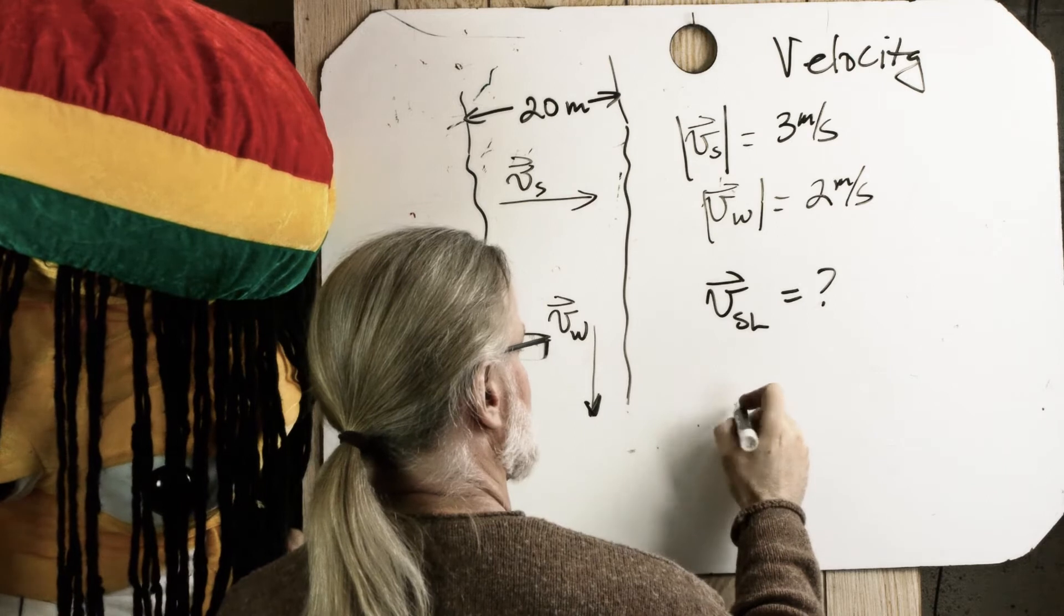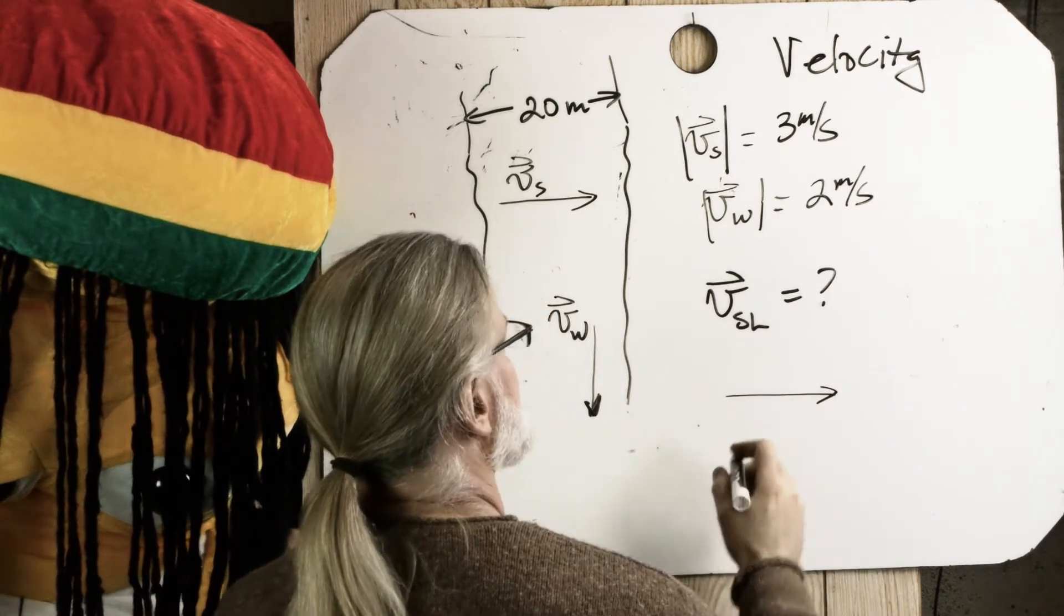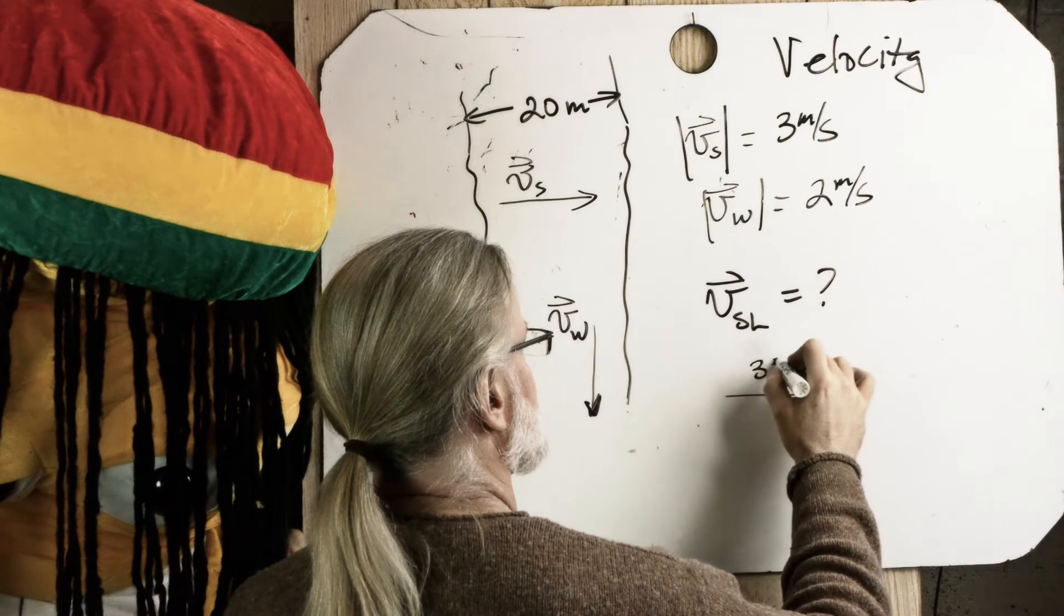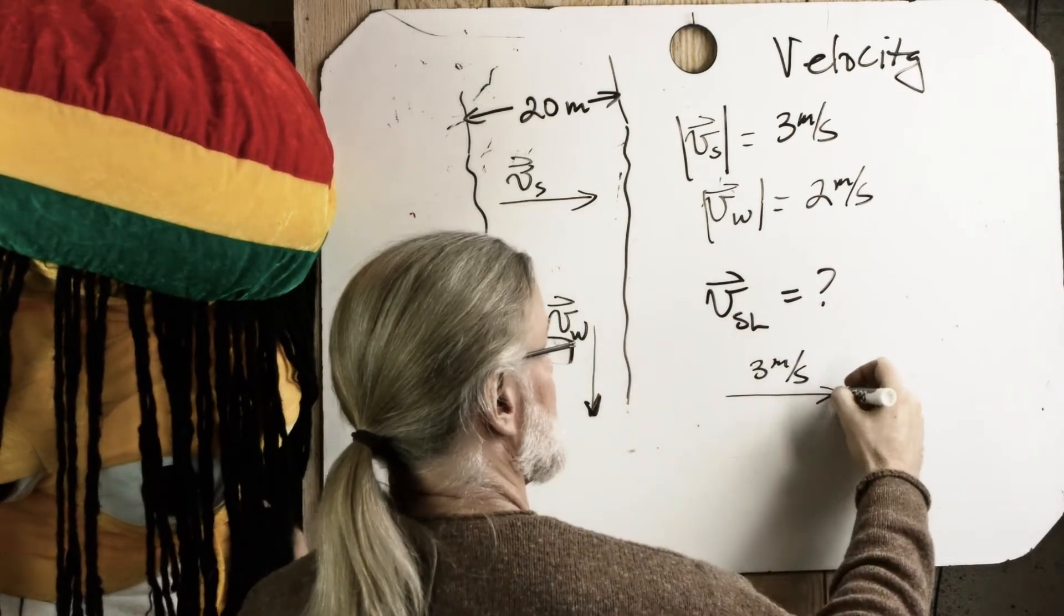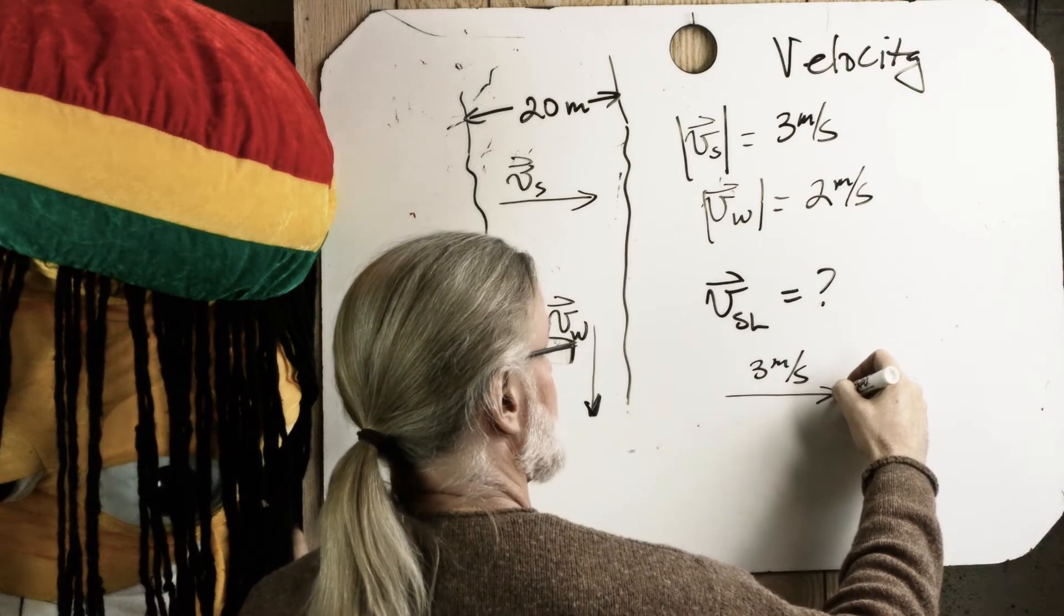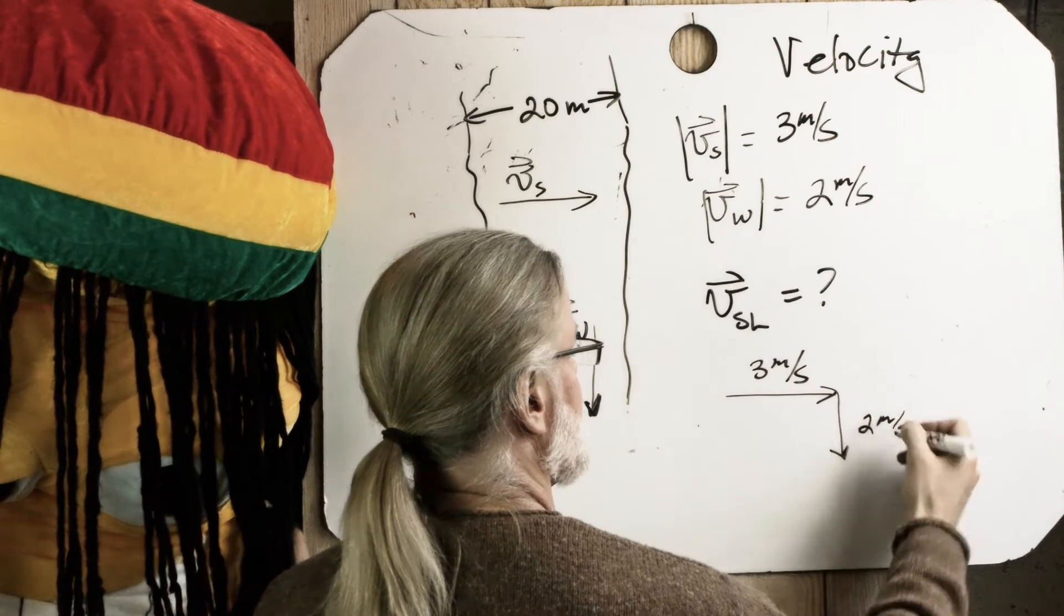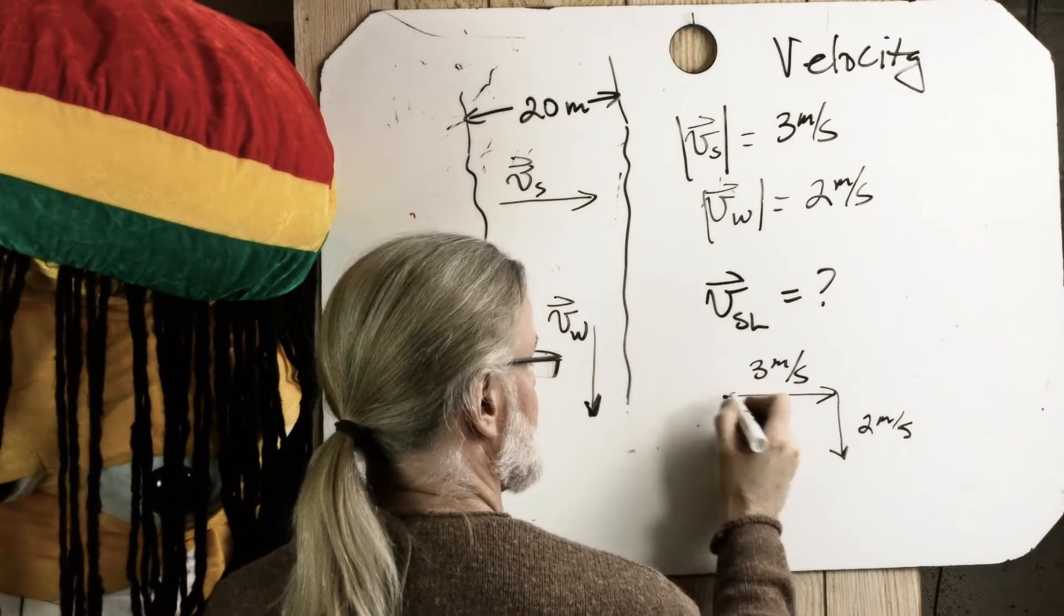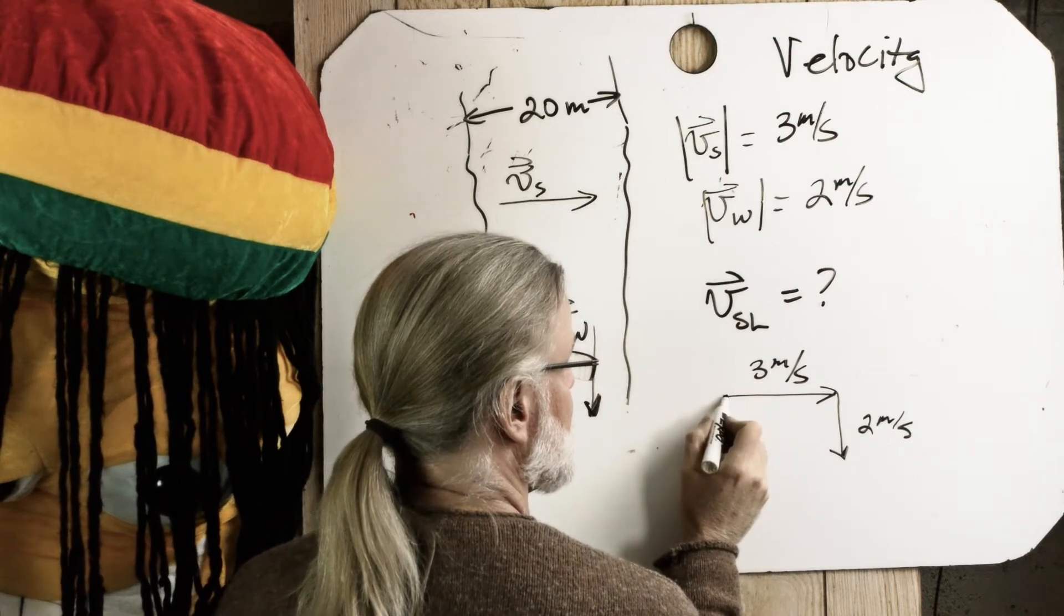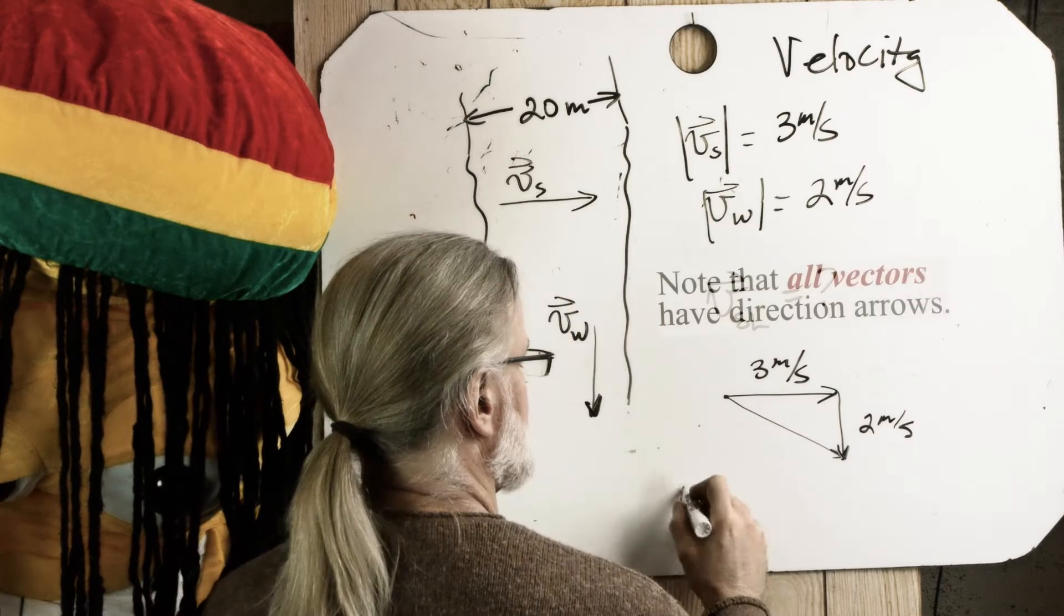And we have, I'm going to start off with velocity of Sally. I'm going like that. She's going three meters per second that way. And the water is going at two meters per second that way. So relative to the land, Sally is going like that. Let me draw it here.